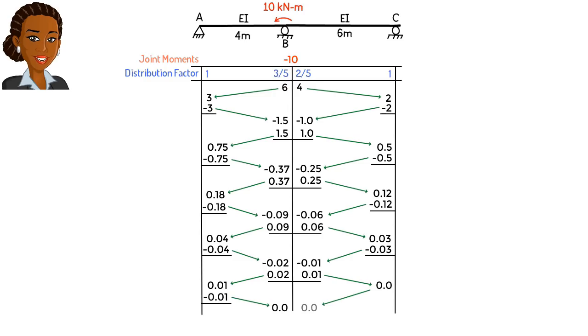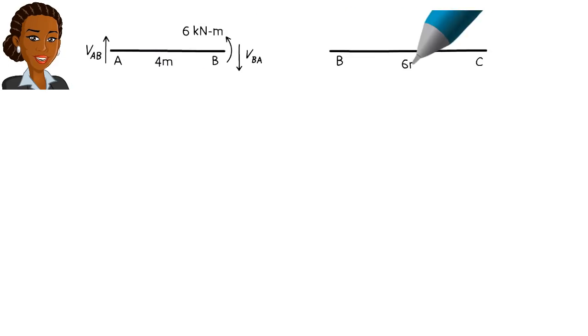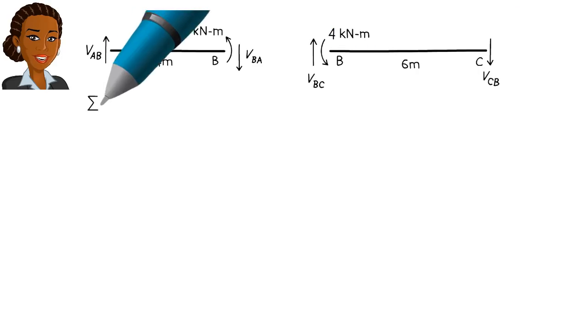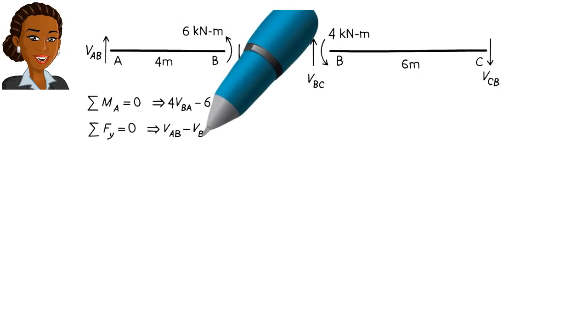We then add up the values in each column to get the member end moments. So, the bending moment at the left end of member AB is 0. The moment at the right end of AB is 6. The moment at the left end of BC is 4. And the moment at the right end of BC is 0. Now we can draw the free body diagram for each beam segment and calculate the remaining unknown member forces like this.